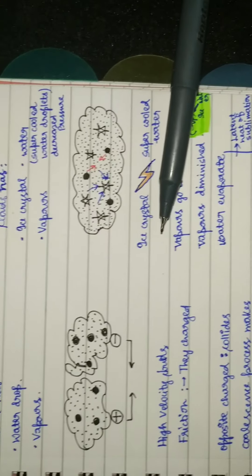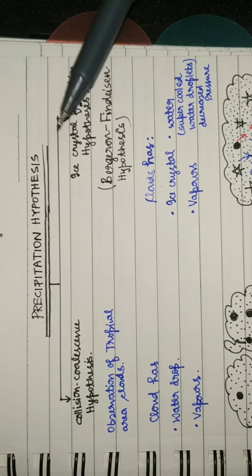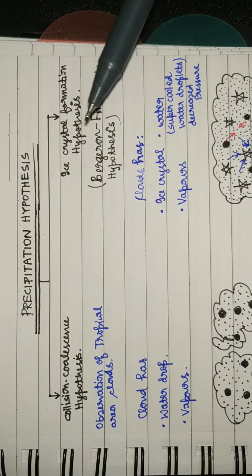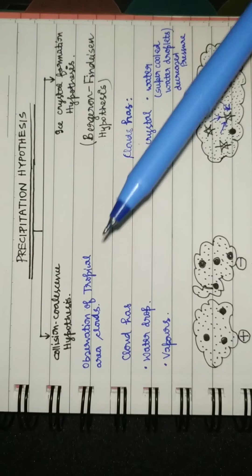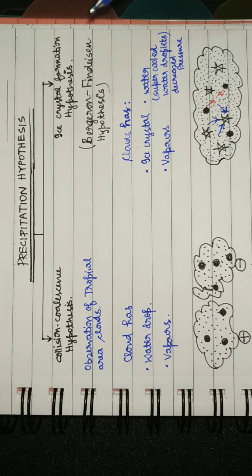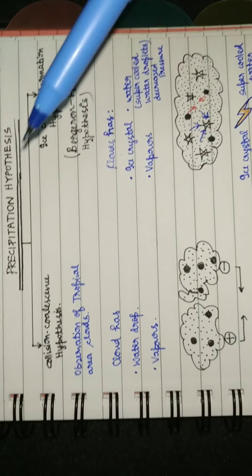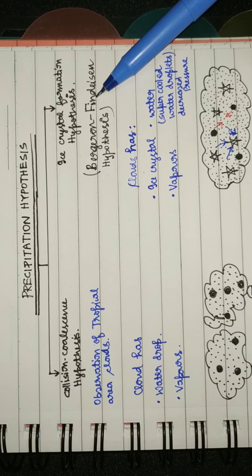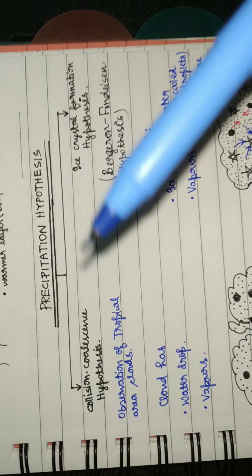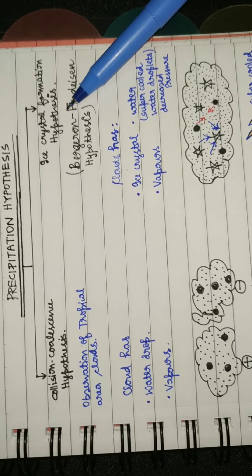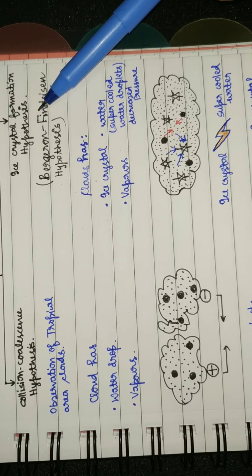Now when these hail, sleet, and snowflakes fall, they melt and form water droplets. This is what the ice crystal formation hypothesis says. So you will be asking now which of these two hypotheses to follow. At present, it is understood that a mix of these two hypotheses provides a more comprehensive understanding of the process of precipitation. Okay, that's all. Thank you.